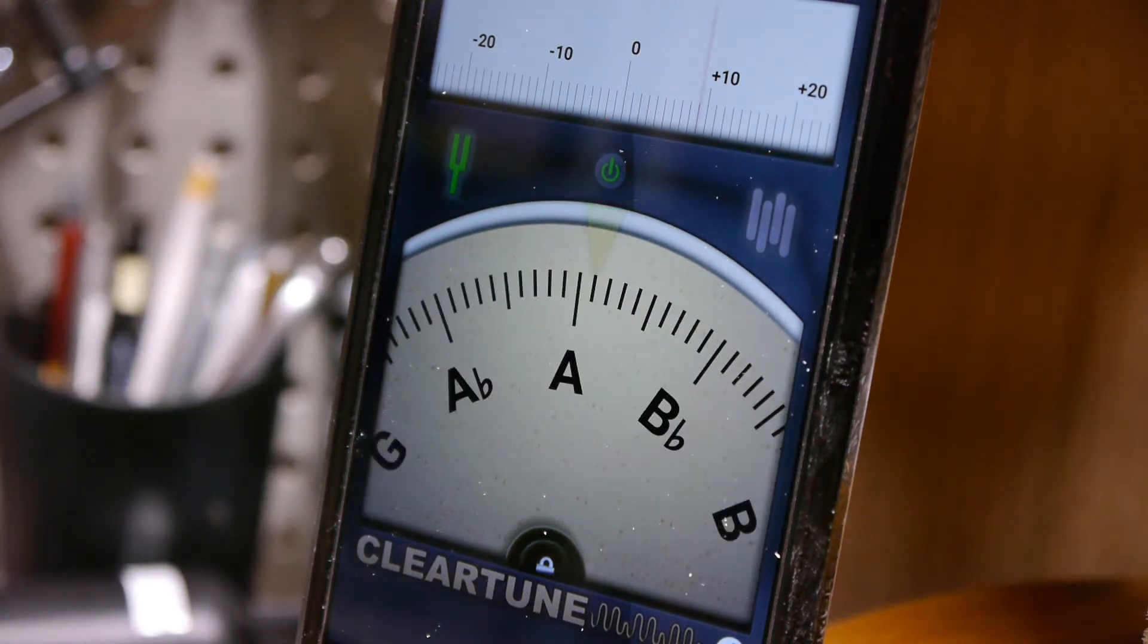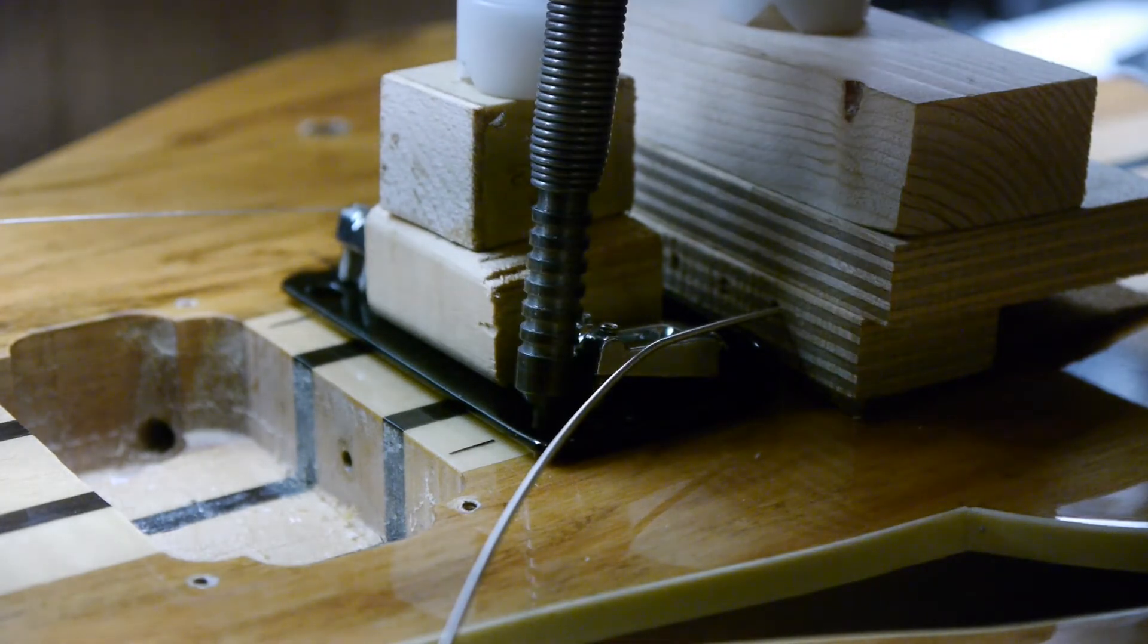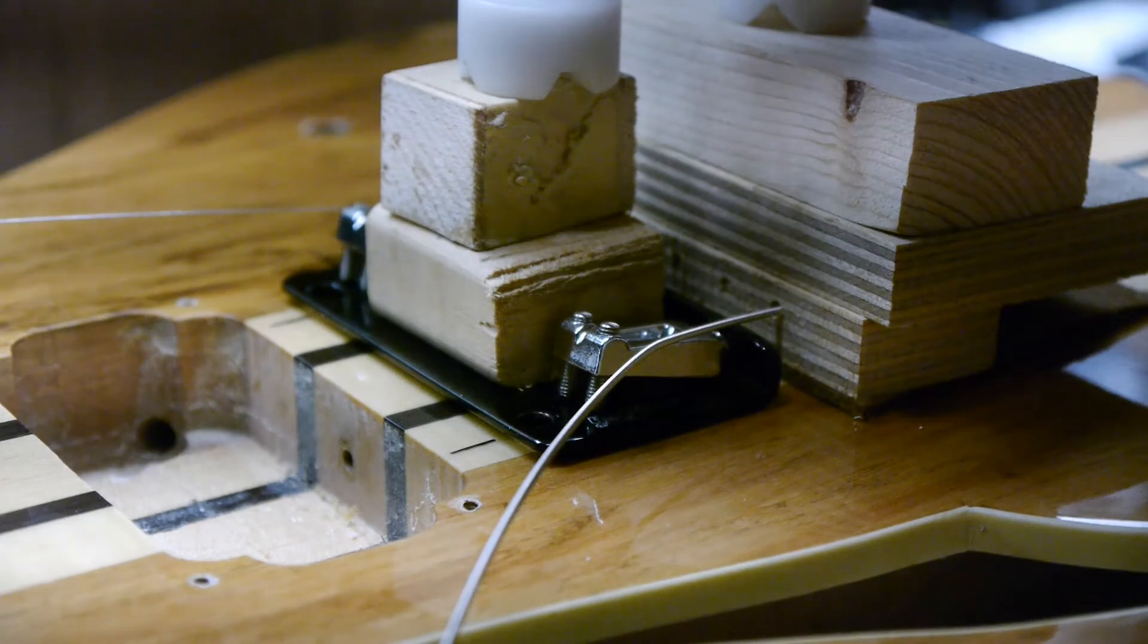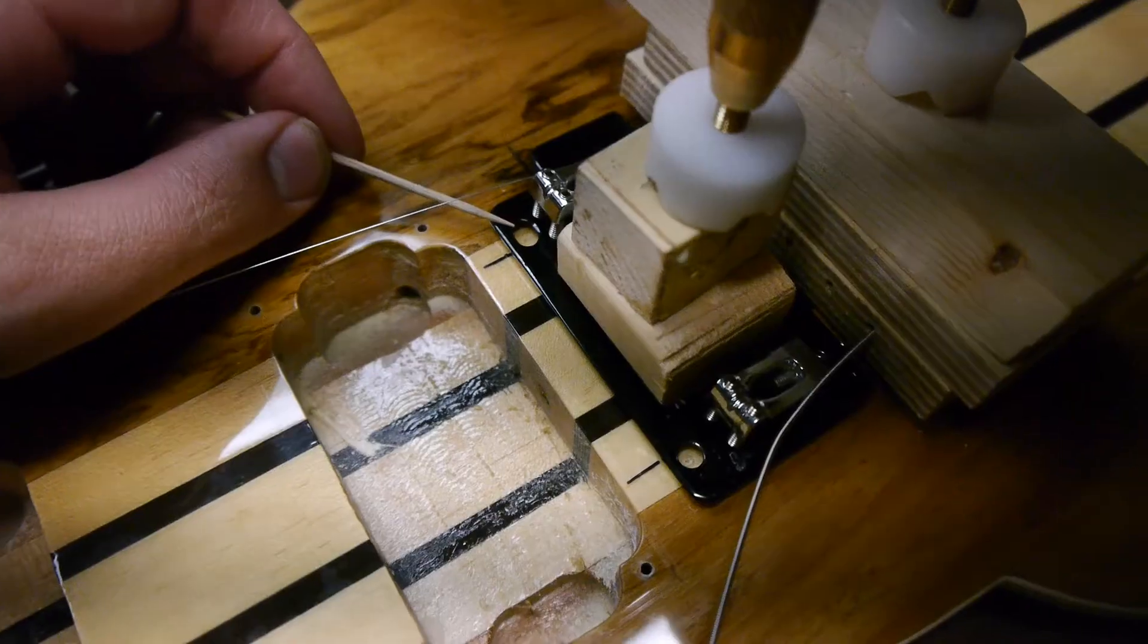Perfect. Now you can come in with a transfer punch or a spring-loaded punch and make your mark. This is a two-point bridge. Whether you have two holes, four or six, just punch them all out and you'll be ready to go.